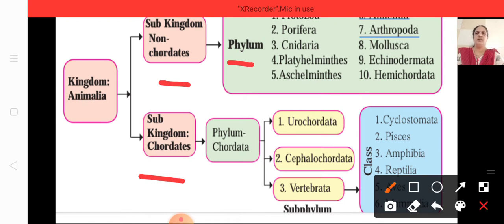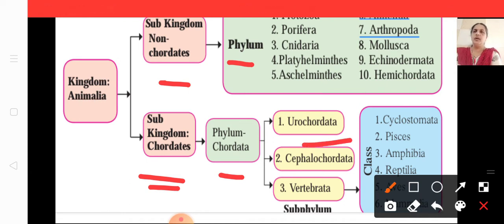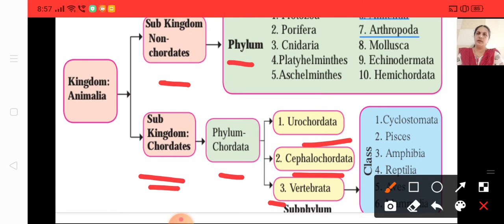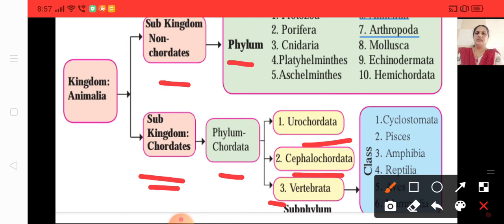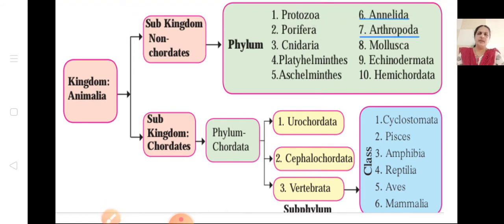We are learning from Porifera onwards this year — Protozoa was already covered last year. Under Chordata, the phylum is also named Chordata and has three sub-phyla: Urochordata, Cephalochordata, and Vertebrata. Under Vertebrata there are six classes: Cyclostomata, Pisces, Amphibia, Reptilia, Aves, and Mammalia. You should know this table by heart.